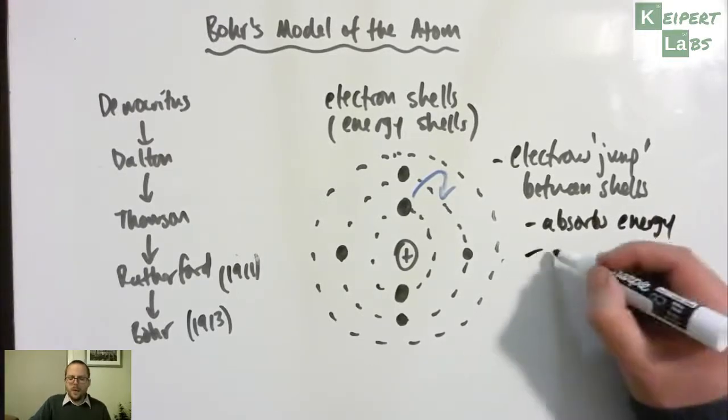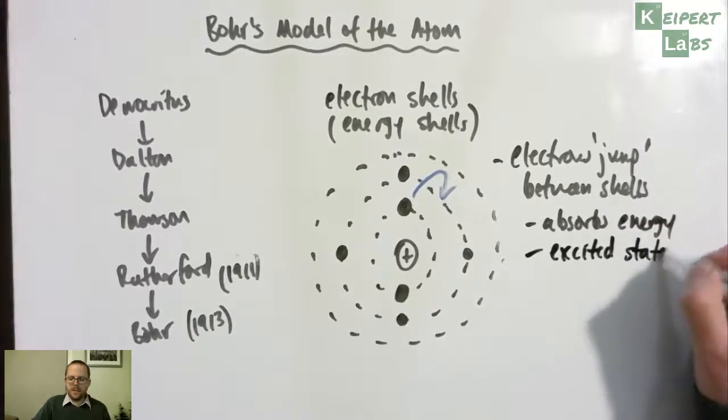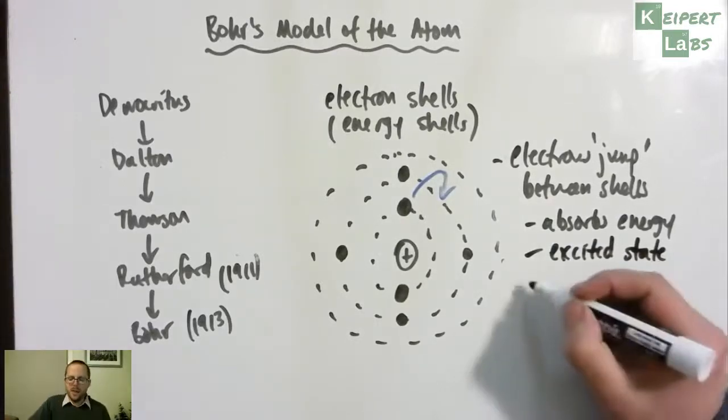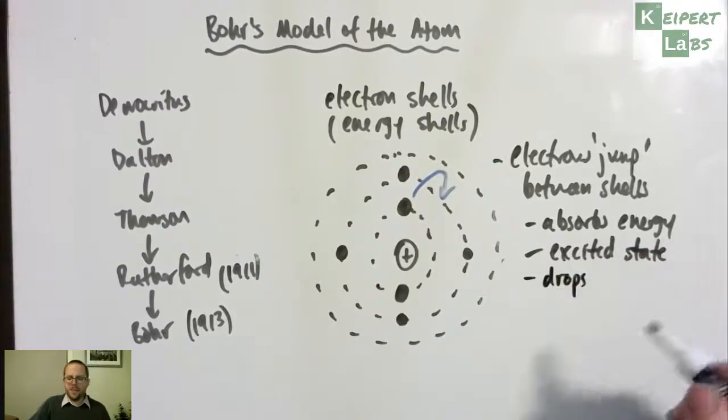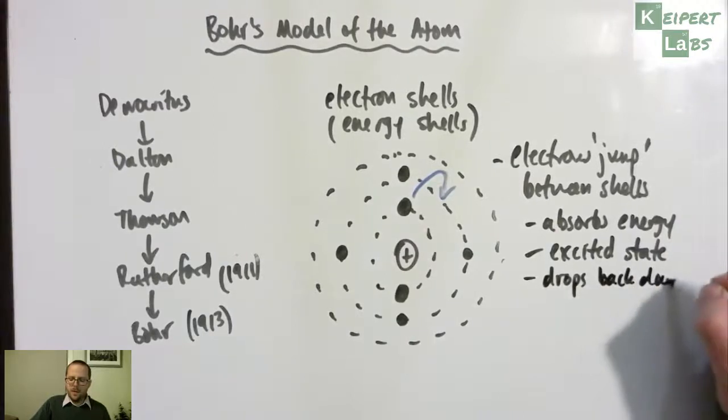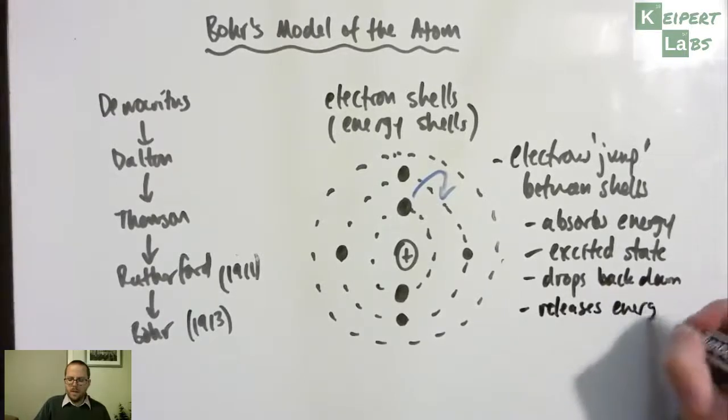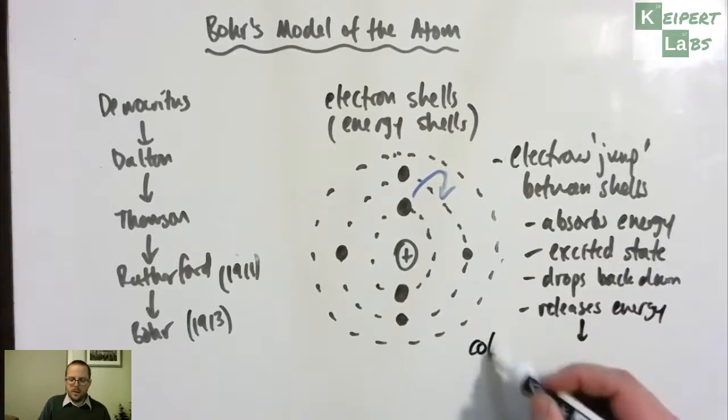And then what we talk about is it reaches what's called an excited state. So it starts off down low, it absorbs energy, and it goes up to this higher, unstable, excited state. But it can't remain in this excited state for very long, so it drops back down, and then what it does is it releases energy in the form of coloured light.